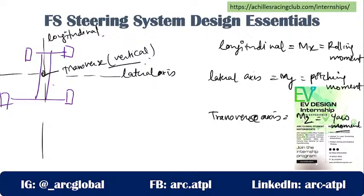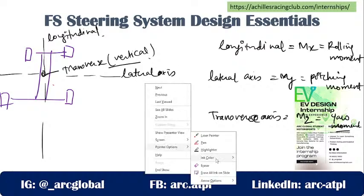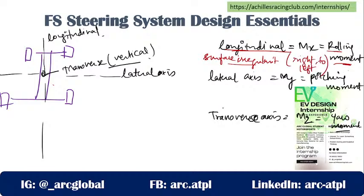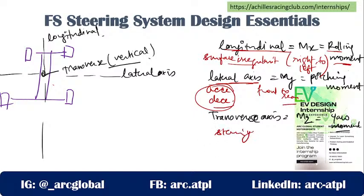Please remember: rolling movement along the longitudinal axis occurs due to surface irregularities - weight transfer from right to left. Pitching movement along the lateral axis occurs because of acceleration or deceleration. Yaw moment along the transverse axis occurs during steering. Please remember all these movements.